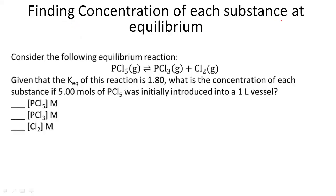Finding concentration of each substance at equilibrium. In this problem, consider the following equilibrium reaction: PCl5 produces or yields PCl3 plus Cl2 or chlorine gas.